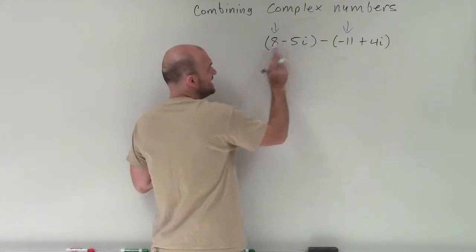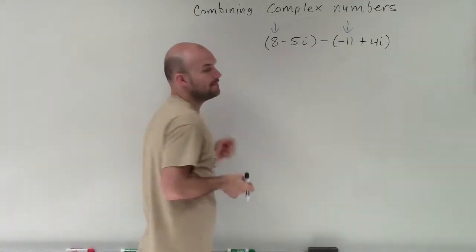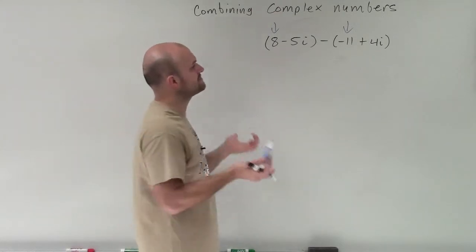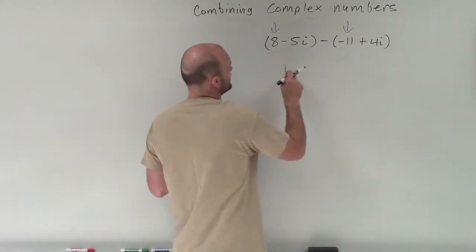So what this says is 8 minus a negative 11. Well, minus a negative 11, that's a double negative, so that's going to turn to positive, so that will leave me with a 19.